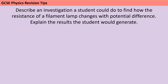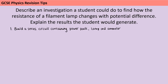The first thing I'll do in this method is build my circuit. I'm going to build a series circuit containing some kind of power source — that could be a power pack, a battery, or a cell — then the filament lamp I'm testing, and also the ammeter, which is there to measure current and needs to be connected in series. I would explicitly use the word 'series', or if diagrams are permitted, I would draw a circuit diagram.